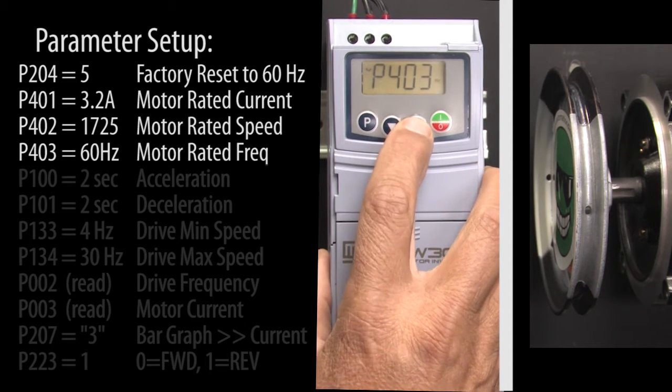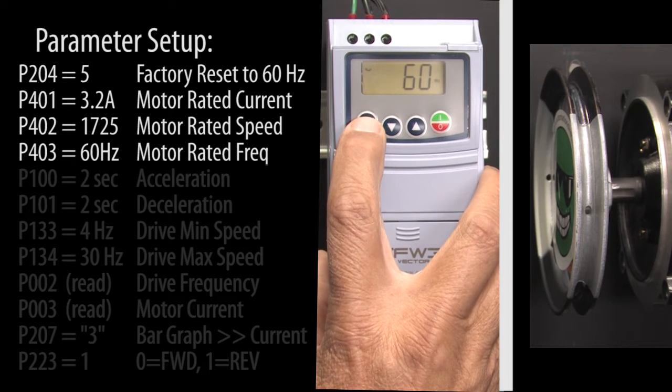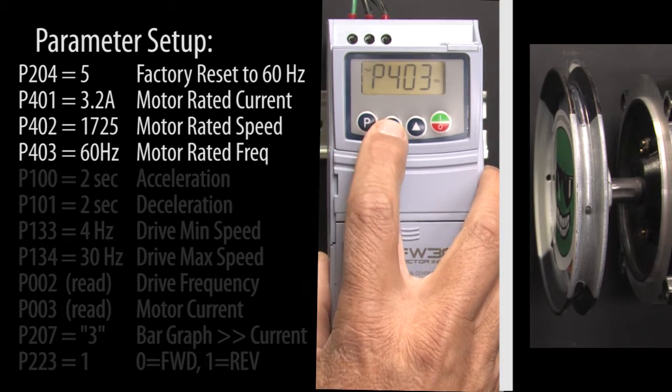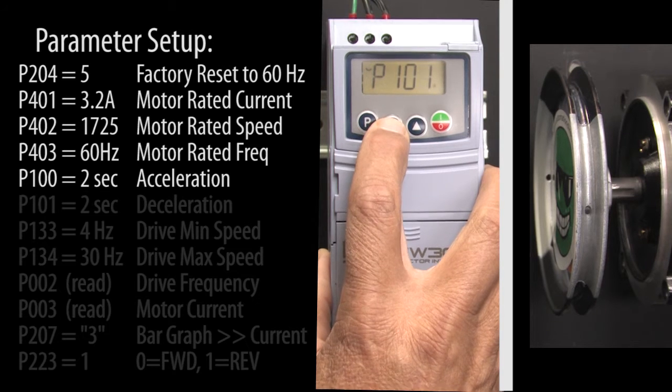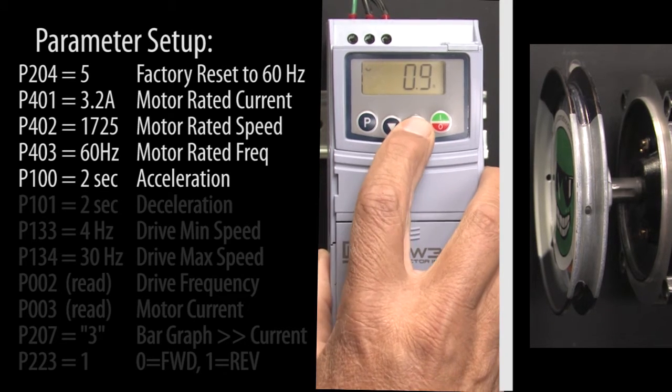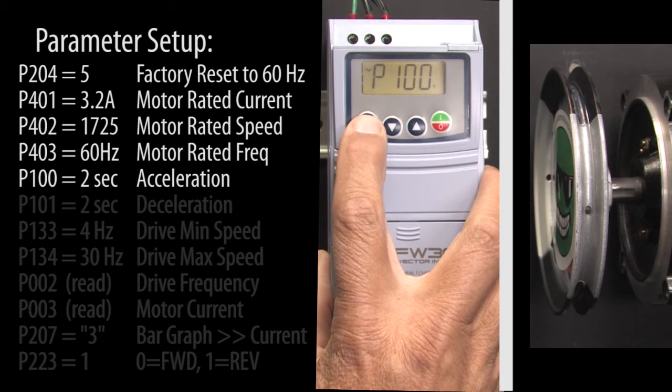Parameter 403 is the motor's max frequency. 60 Hz is what we want so hit P to accept that. Scroll to the acceleration parameter which is 100, hit P to change it, I'll change it to 2 seconds and hit P to accept that value.